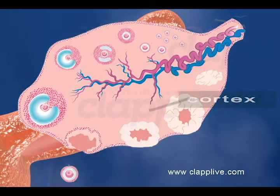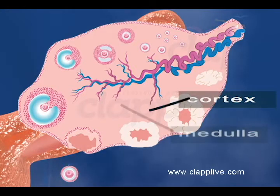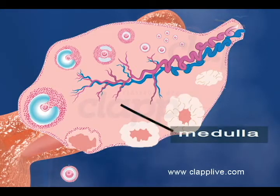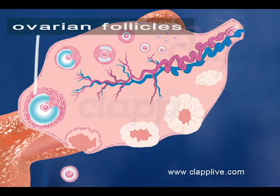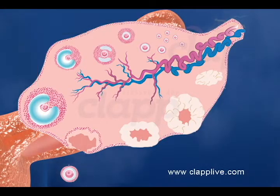Stroma has an outer cortex and an inner medulla. The ovarian cortex contains some rounded bodies named follicles at various stages of development. Each follicle contains an ovum.